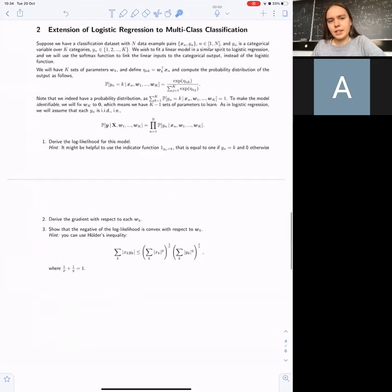Then you have a second question about multi-class classification. So before in the class you saw multi-class classification only for two classes, so you called it binary classification. Here you have k categories, and your label could be either one of them. We want to fit some linear model similar to logistic regression.